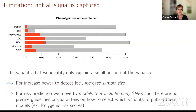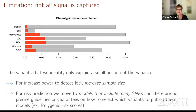A major limitation is that not all the signal is captured. In early studies, as this picture refers to, you can see what portion of these traits we could explain in a dataset—represented by the total length of the bars—and the red portion of the bars is what we could explain with genetic variants. This is an old plot that dates back to 2009. Since then, we have dramatically increased sample sizes, which has contributed to increase the power and proportion of variance explained, though it is still fairly contained.